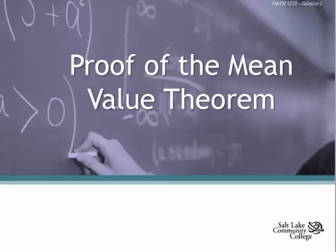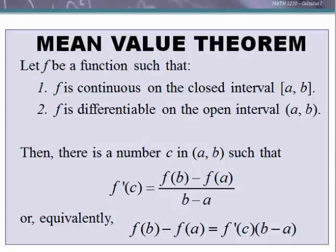Let's look at a proof of the mean value theorem. The mean value theorem states: let f be a function such that (1) f is continuous on the closed interval from a to b, and (2) f is differentiable on the open interval from a to b. Then there is a number c in the open interval from a to b such that f'(c) equals f(b) minus f(a) over b minus a — which is the slope of the secant line joining a and b — or equivalently, f(b) minus f(a) equals f'(c) times b minus a.